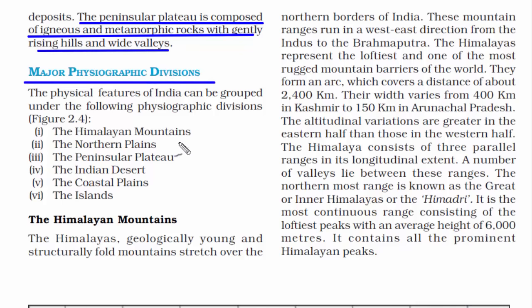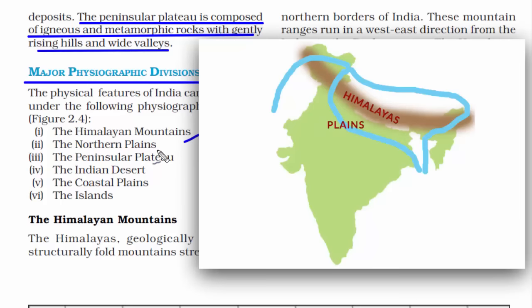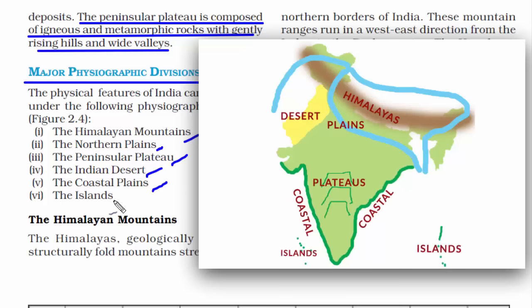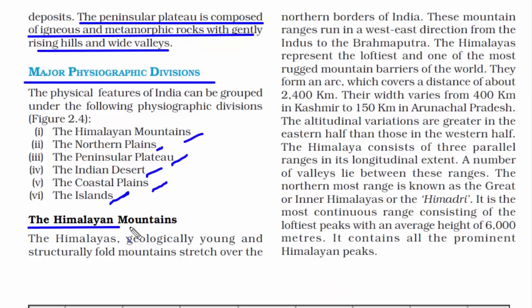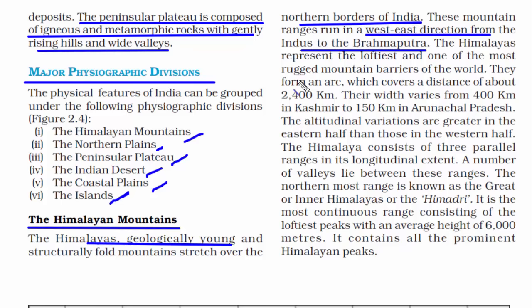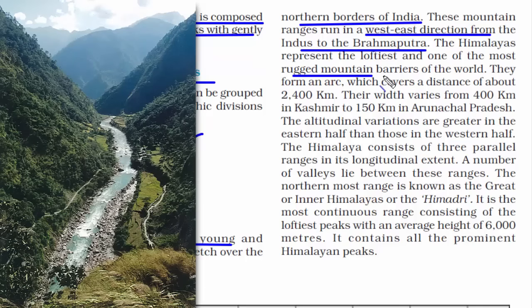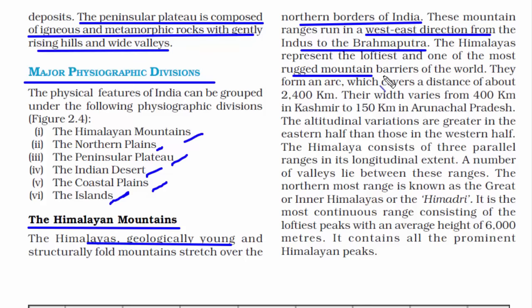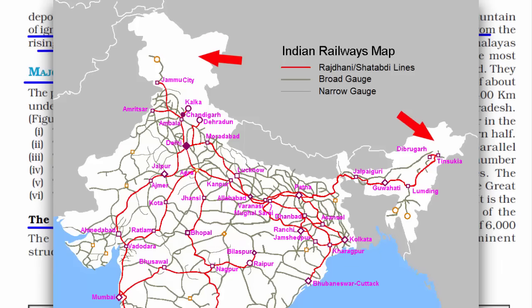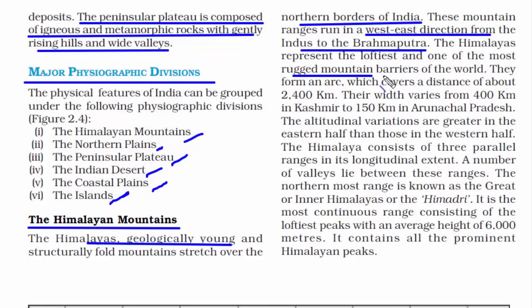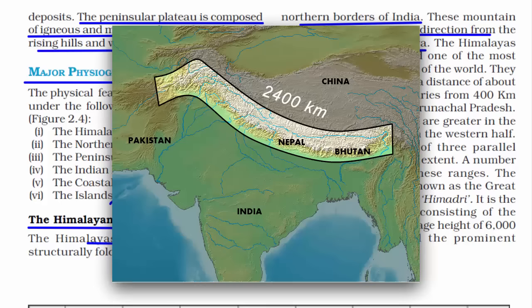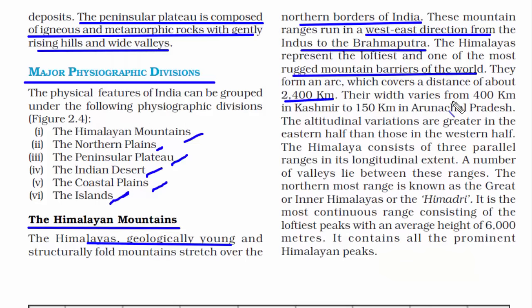The major physiographic divisions are: the Himalayan mountains, the northern plains, the peninsular plateau, the Indian desert, the coastal plains, and the islands. The Himalayan mountains are geologically young and consist of a huge chain of mountains along India's northern borders. They are one of the most rugged mountain barriers in the world, with high peaks and deep valleys and gorges formed by fast-flowing rivers — which is why there is very limited railway infrastructure in northern India. The length of this mountain range is 2,400 kilometers and the width is 400 kilometers, narrowing to 150 kilometers in Arunachal Pradesh towards the east.